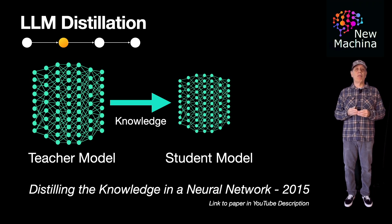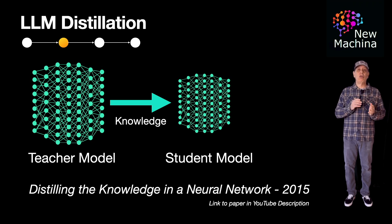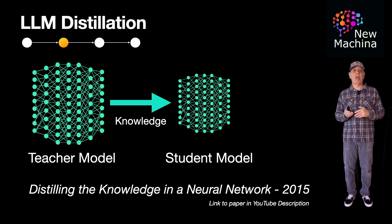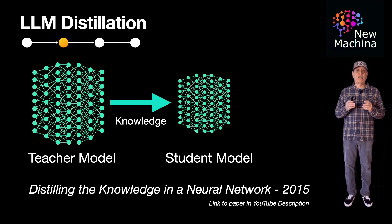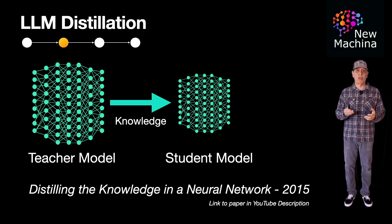So how does it work? Training a smaller student model using knowledge from a teacher model involves several key steps. First, the teacher model generates soft labels. Instead of just giving correct answers, the teacher model outputs the probability distributions over possible answers.